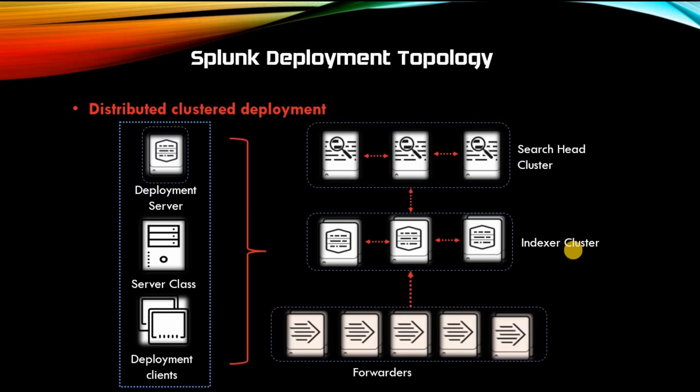For huge environments and high availability setups, we need search head and indexer clusters. This topology introduces indexer and search head clustering in conjunction with an appropriately configured data replication policy, providing high availability of data in case of indexer or search head peer node failure. Multi-site clustering provides data redundancy across physically separated distributed locations, with the possibility for geographically separated distribution.